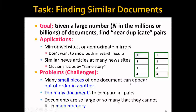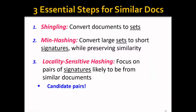We address these challenges with three essential steps. First, we convert documents into sets. Second, we use min hashing to convert these large sets into short signatures while preserving similarity. Third, the key step is locality-sensitive hashing, which focuses on those short signatures to find pairs likely pointing to similar documents.